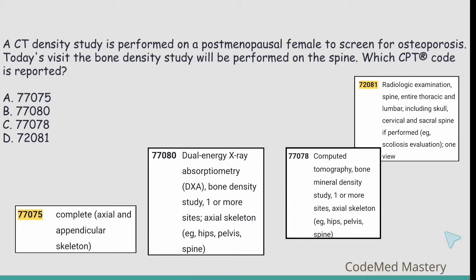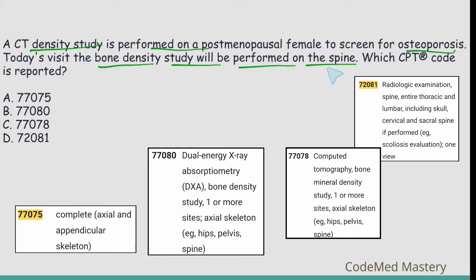Option D: 72081 is for radiologic examination, spine entire, thoracic and lumbar, including skull, cervical, and sacral spine if performed. So which among these four codes is correct? In the question they have mentioned CT density study performed to screen for osteoporosis, and the bone density study will be performed on the spine. The appropriate code will be 77078, which is for computed tomography bone mineral density study, one or more sites, axial skeleton — hips, pelvis, and spine. The anatomic location is spine, so it exactly matches code 77078, which is option C.